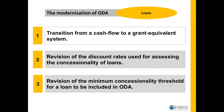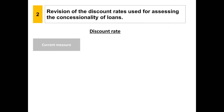The discount rates and the thresholds are also changing in the modernized measure. The concessionality level of a loan depends on its terms and on the discount rate used to calculate the present value of future repayments. In the current ODA measure, the discount rate used for the grant element calculation is 10%. In the modernized measure, the discount rate has been revised to reflect the fact that the provider effort in extending a loan consists of both the funding cost and the risk associated with the loan.